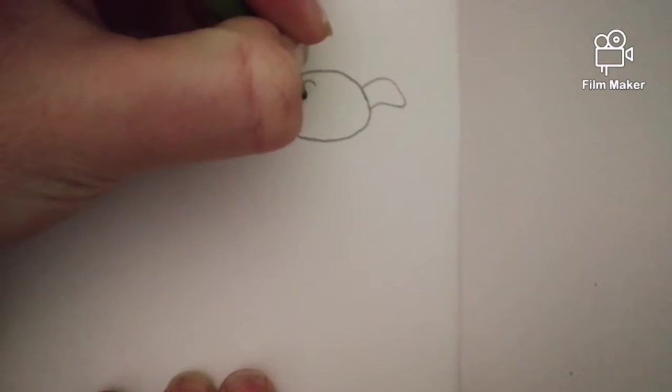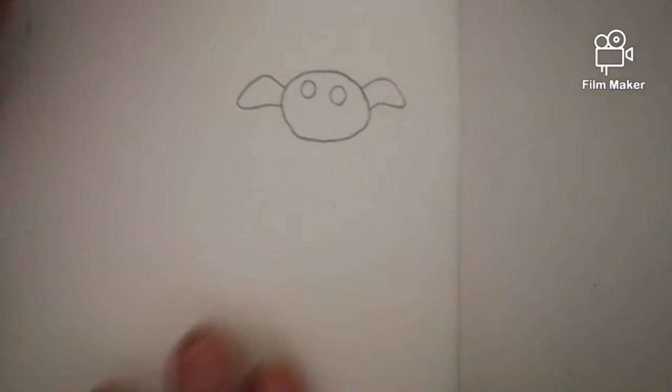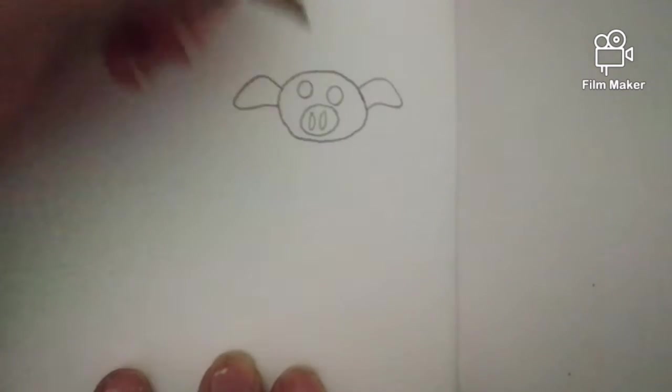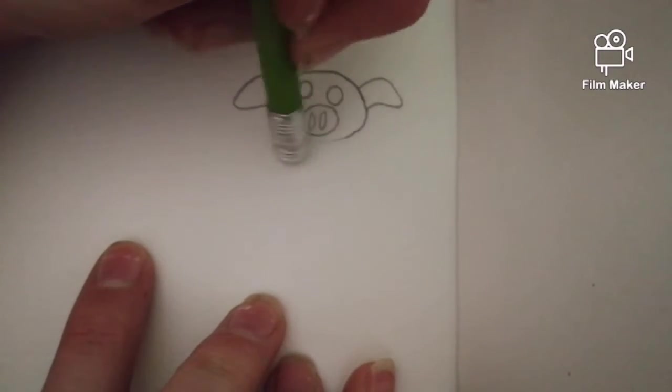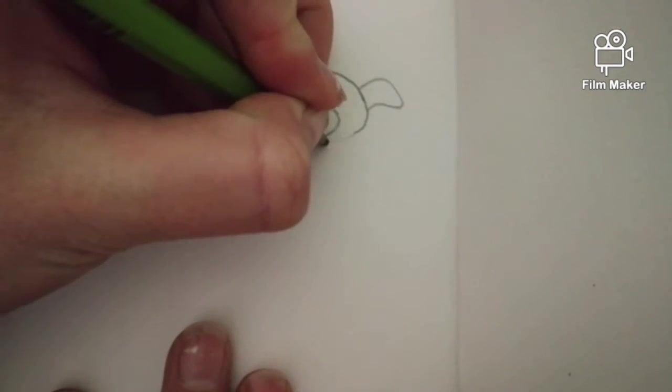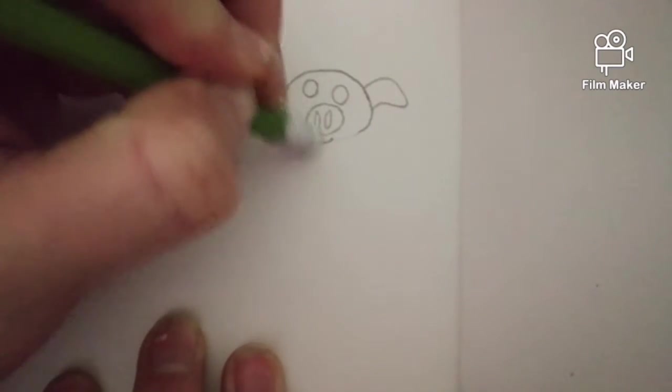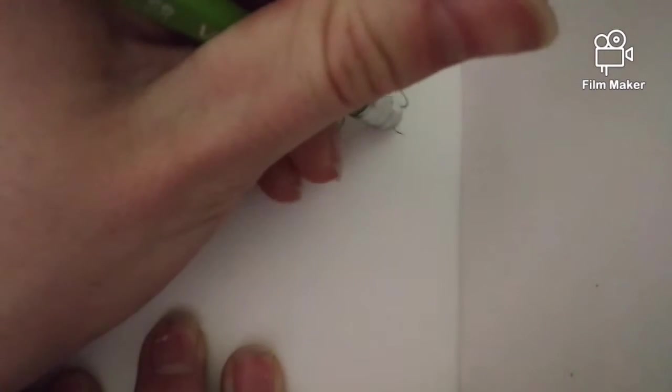Then you're going to draw two eyes. We're going to fill them in later, and the nose. And then you're going to erase the bottom part of your line and draw a little mouth. Just doing a little happy face. Erase the bottom part of your line until you get to the ears like this.